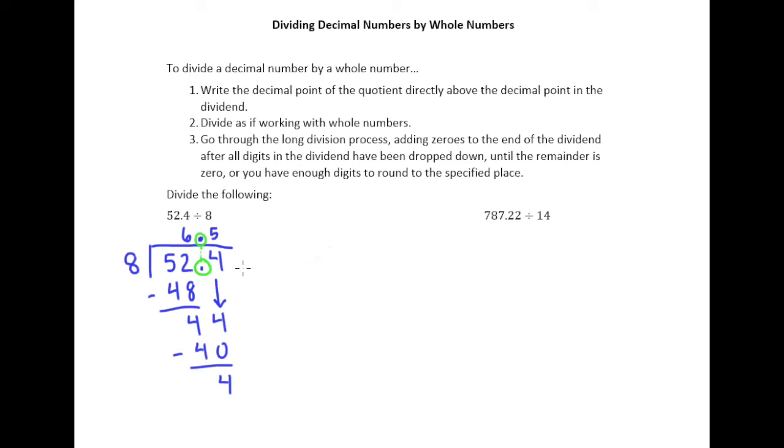Either the remainder zeroes out or we have enough digits in our quotient to round to whatever place it asked us to. Now, just understand that that latter case is not going to happen for either of these examples because we weren't told to round to any place value. So what we're looking for here is we're looking for the remainder to zero out.